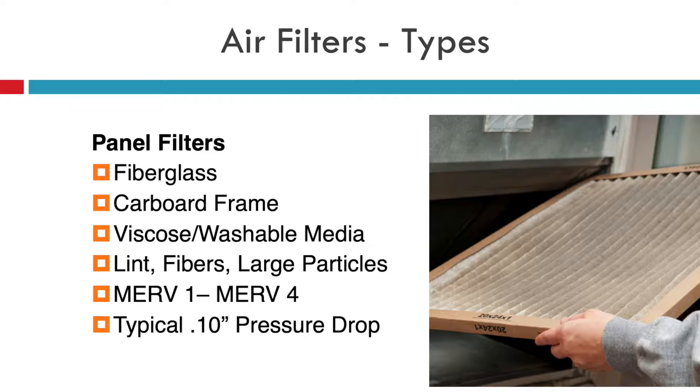The first option, which is usually shipped with most air handlers and furnaces, is just a panel filter. Typically these filters are made out of fiberglass, maybe some MERV 1 or 2 media. They have very little pleats, usually come in a cardboard frame or are washable media, and they're really there to pick up things like lint, fibers, or large particles — stuff you don't want getting in the coil. The minimum efficiency rating value of these filters is somewhere in the MERV 1 to 4 range, with a typical 0.1 inch of pressure drop.